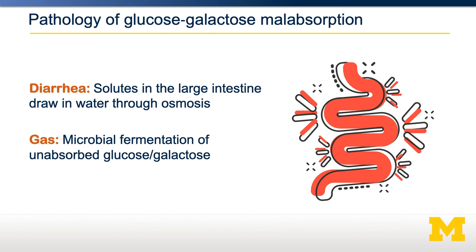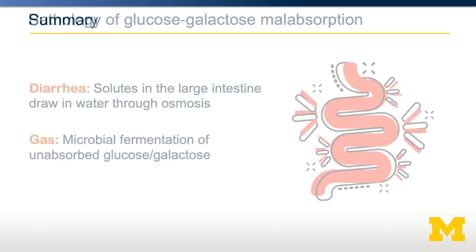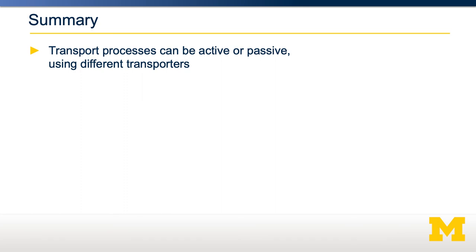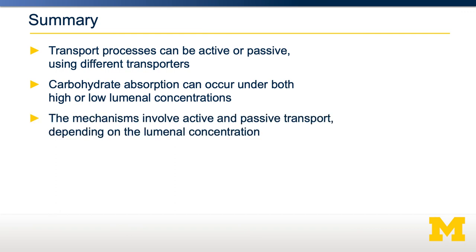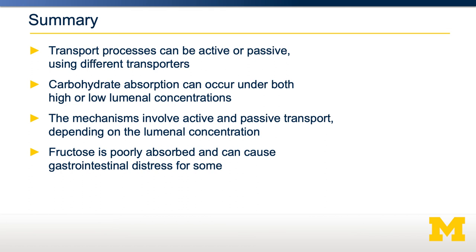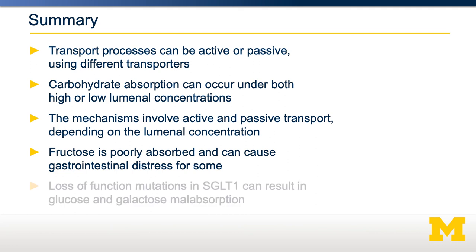Those newborns should be identified early in life and prevented from consuming lactose. In summary, there are several transport processes important for digestion and absorption — these can be active or passive, depending on whether energy is required and whether there is a need to concentrate a particular sugar. Carbohydrate absorption occurs under both high and low luminal concentrations of sugars, with different mechanisms for each, involving both active and passive transport. Fructose, because it lacks an active transport mechanism, is generally poorly absorbed and can cause gastrointestinal distress in large amounts. Rare loss-of-function mutations in SGLT1 result in glucose and galactose malabsorption — not due to an inability to digest those sugars, but an inability to concentrate them out of the lumen and into the body.